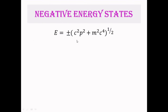The energy eigenvalues are plus or minus root of (c² p² + m² c⁴), where m is the rest mass. So when energy levels are calculated in the relativistic equation of quantum mechanics, there are two sets — one all positive and the other all negative. We represent the positive energy values as E+ and the negative energy values as E−. E will be minimum when p equals zero, so for E+, the minimum value when p=0 becomes mc².